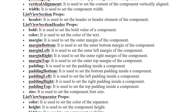ListView Section Header props: Header — used to set the header element of the component. Bold — used to set the bold value of the component. Color — used to set the color of the text. Margin — bottom, left, right, and top. Padding — bottom, left, right, and top. Size — used to set the component font size.